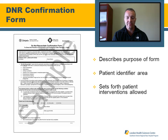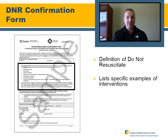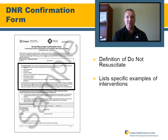The patient's name is recorded here — first name and last name. The statement in this section also sets forth the patient care interventions that can and cannot be done when the form is completed and signed by the designated healthcare professional. The next section of this DNR confirmation form, point one, is located directly below the patient's name and includes the definition of what 'do not resuscitate' means. It also provides specific examples of what we can and cannot do when presented with this form for the patient.